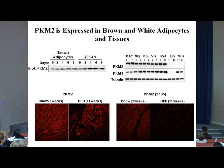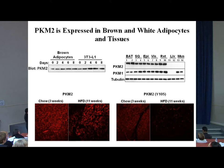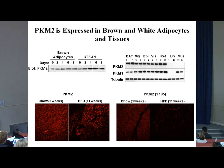With PKM2 confirmed in fat cell lines and mouse tissues, we looked at staining of pyruvate kinase in fat depots from mice fed a chow diet for three weeks or a high-fat diet for 11 weeks. There is definite staining in these different fat pads. The interesting finding was that when we looked at tyrosine phosphorylation of PKM2 in these sections, we found that upon high-fat diet the phosphorylation of PKM2 is decreased compared to chow-fed mice, suggesting that high-fat feeding regulates PKM2 tyrosine phosphorylation.